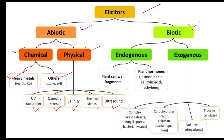Biotic elicitors are further divided into endogenous and exogenous. Endogenous elicitors could be plant cell wall fragments or plant hormones like jasmonic acid, salicylic acid, ethylene, etc.